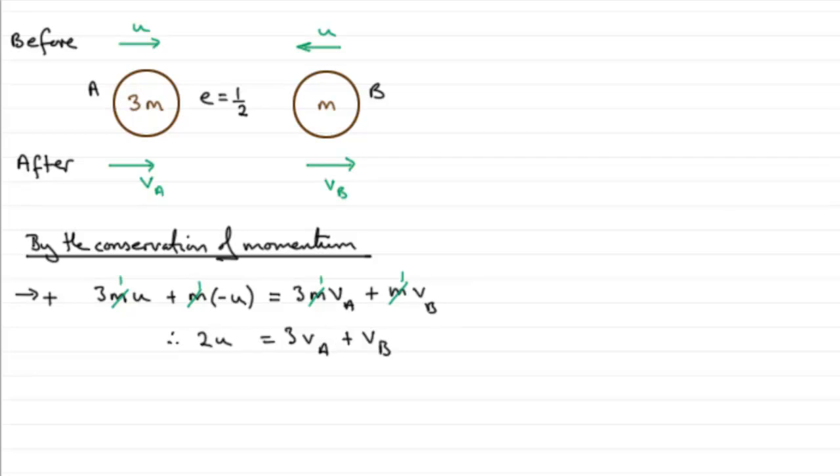We've got two unknowns, so we know we're going to have to have simultaneous equations. Where do we get the other equation from? Well, it's by considering Newton's law of impact.